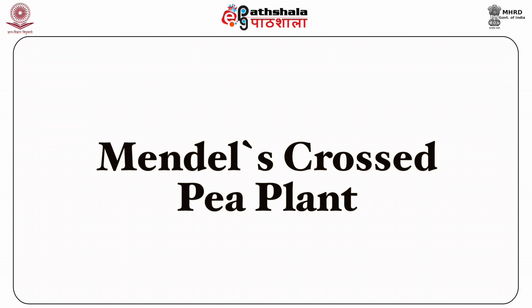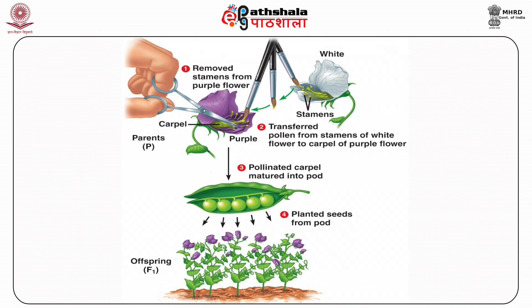Mendel crossed pea plants — the diagrammatic representation of Mendel's experiment. At first, he removed the stamens of pea plants bearing purple flowers. Then he removed the sperm-bearing pollen from stamens of white flowers to the egg-bearing carpel of the purple flower. Then the pollinated carpel matured into a pod. He planted seeds from the pod and observed that in the first generation all the offspring were of purple color.